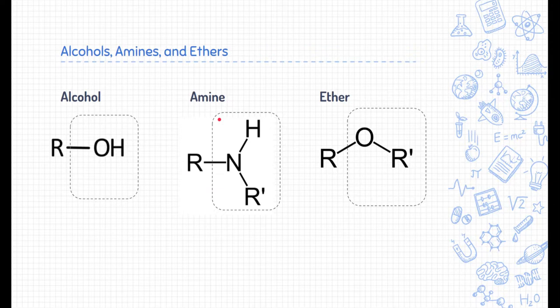Amines are found in natural or synthetic dyes. They're found in polymers, vitamins, and medications, such as penicillin. They're extremely essential to life. They're found in amino acids, hormones, and even DNA. So you see this little nitrogen with the hydrogen attached to it.